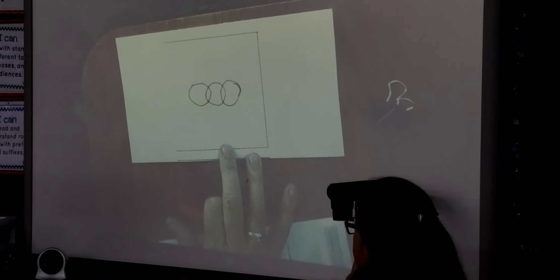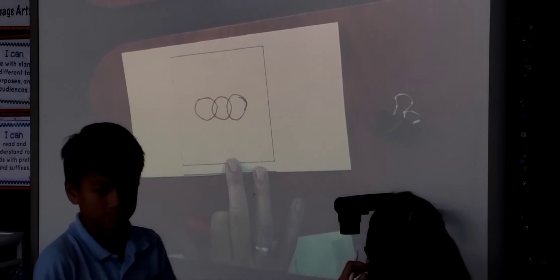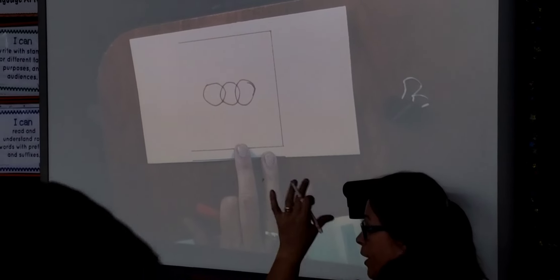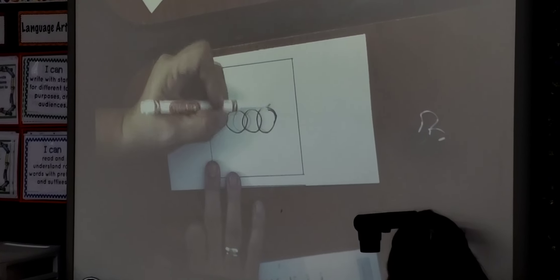Now when you're all done you're going to erase the interlocking circles so that you don't have a bunch of shapes, but you're creating your horse with your shapes.